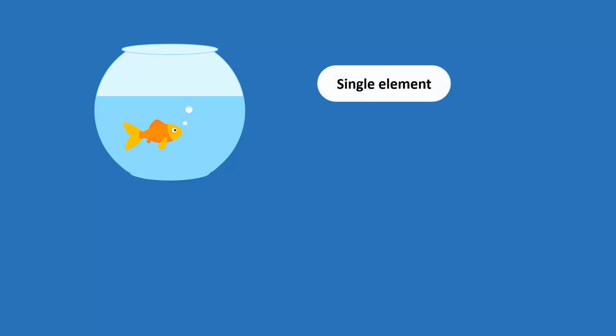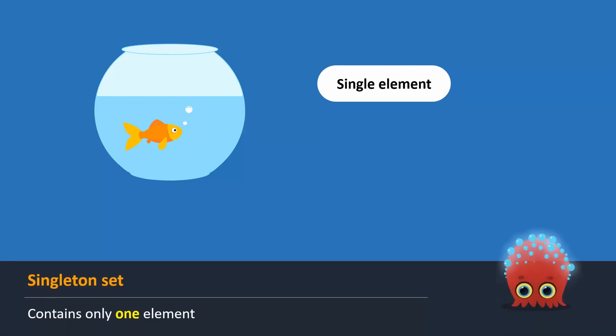Consider these two sets. Can you tell how many fishes are there in the left aquarium? There is one fish in the left aquarium. We can also say that there is a single element in this aquarium. When a set contains only one element, we call it a singleton set.